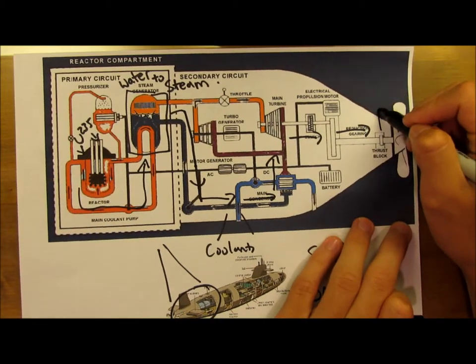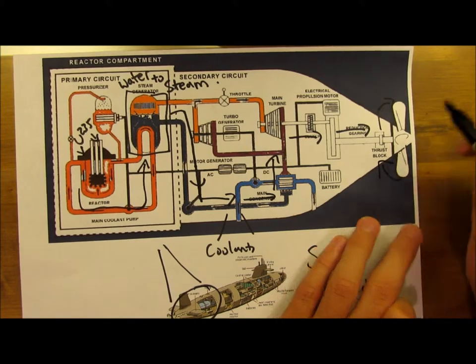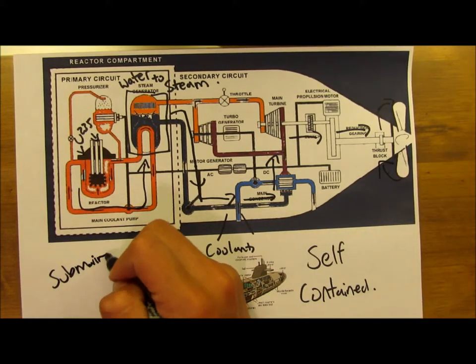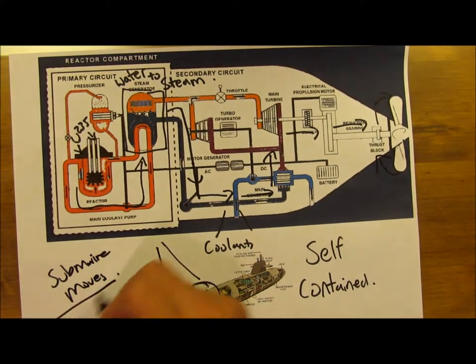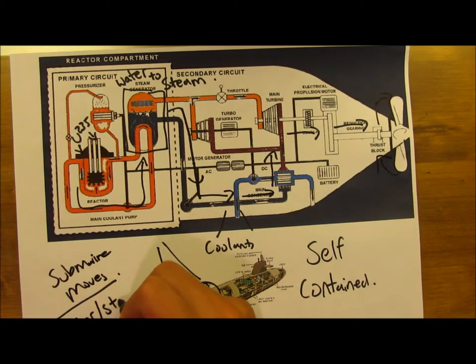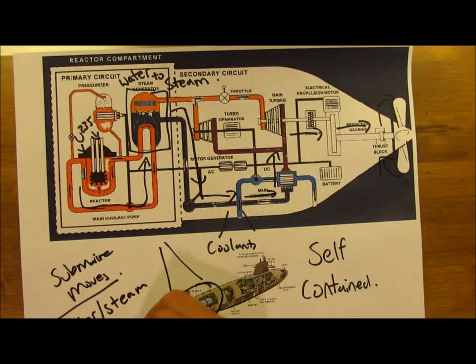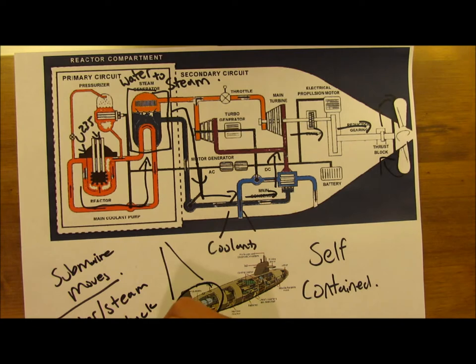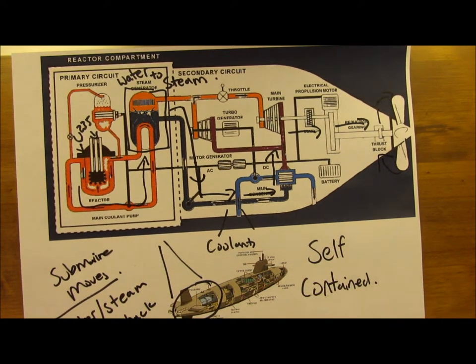Steam then rises to the top of the container by evaporation and is passed through a series of tubes all the way to the turbine. When the steam reaches the turbine, it turns the motor, creating the submarine to move.